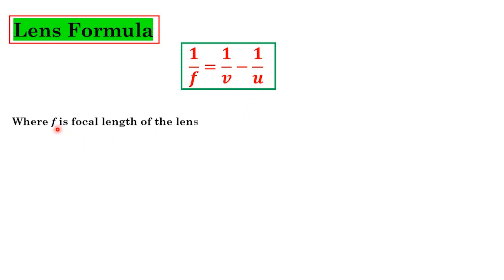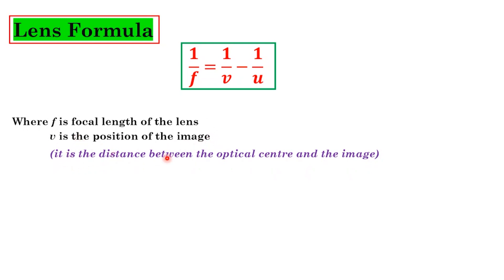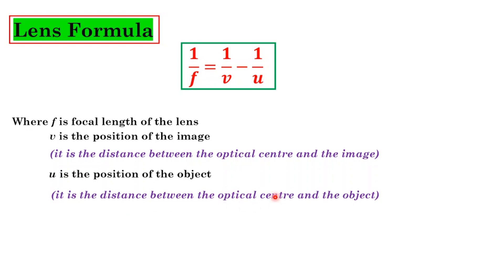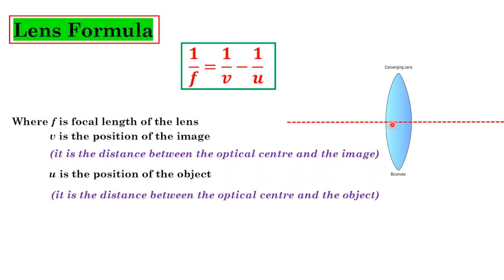In the lens formula, f is the focal length, v is the position of the image — meaning the distance between the optical center and the image — and u is the position of the object, which is the distance between the optical center and the object. All distances are measured from the optical center.